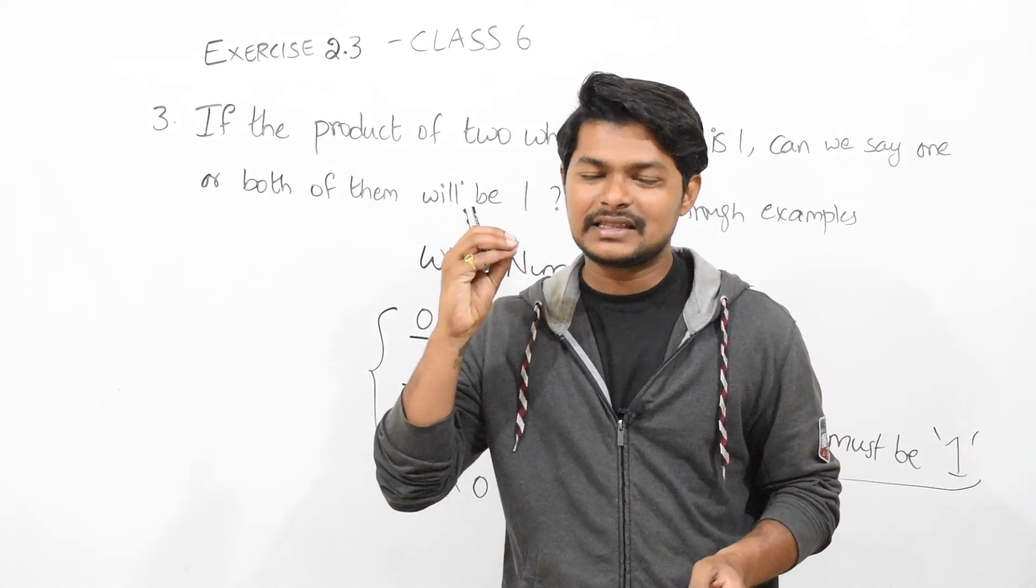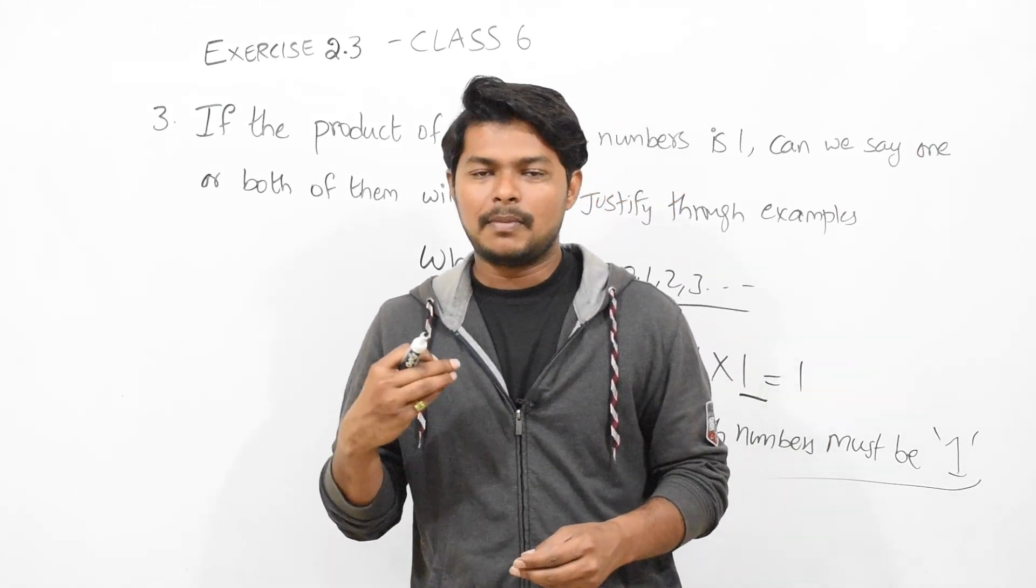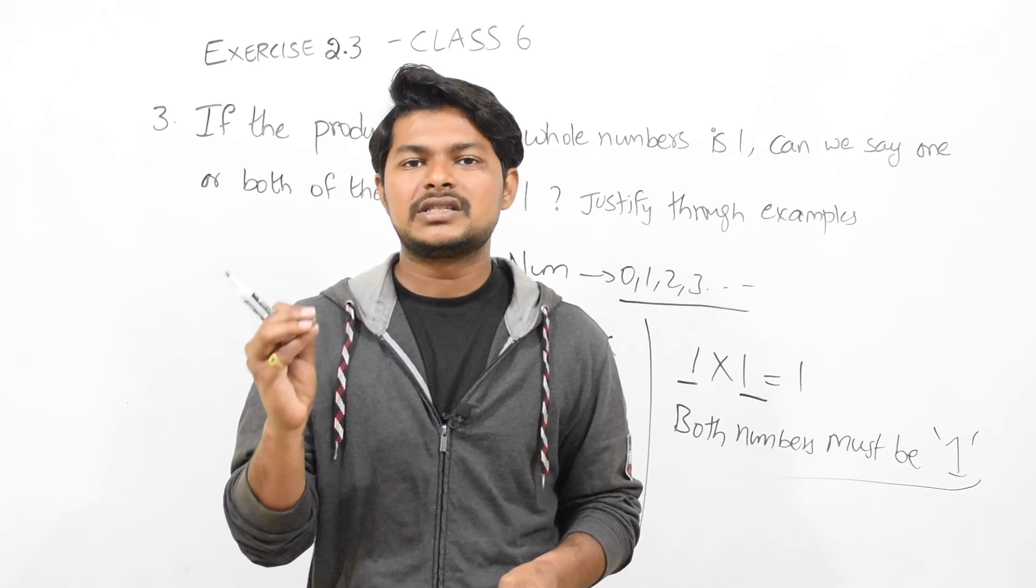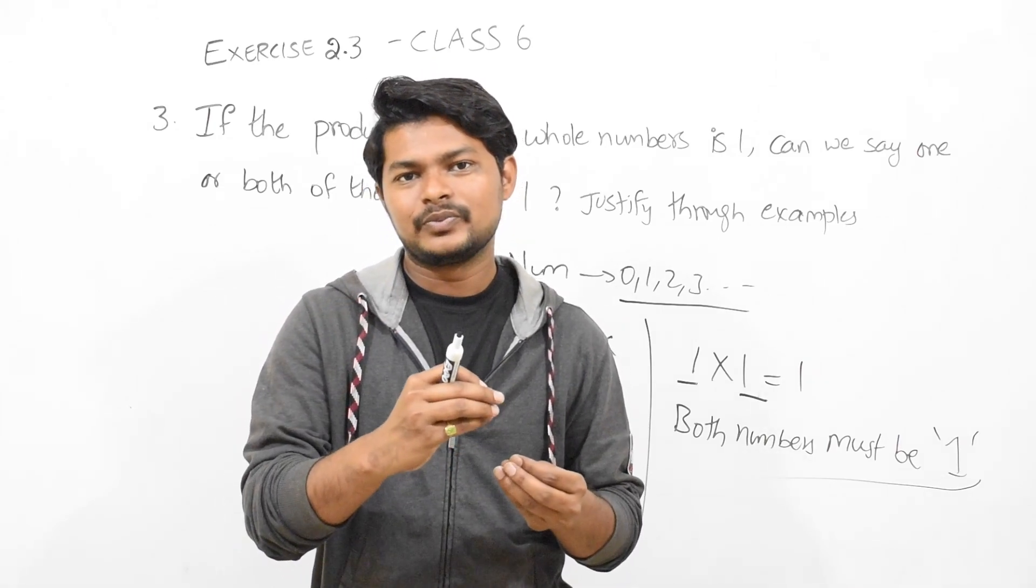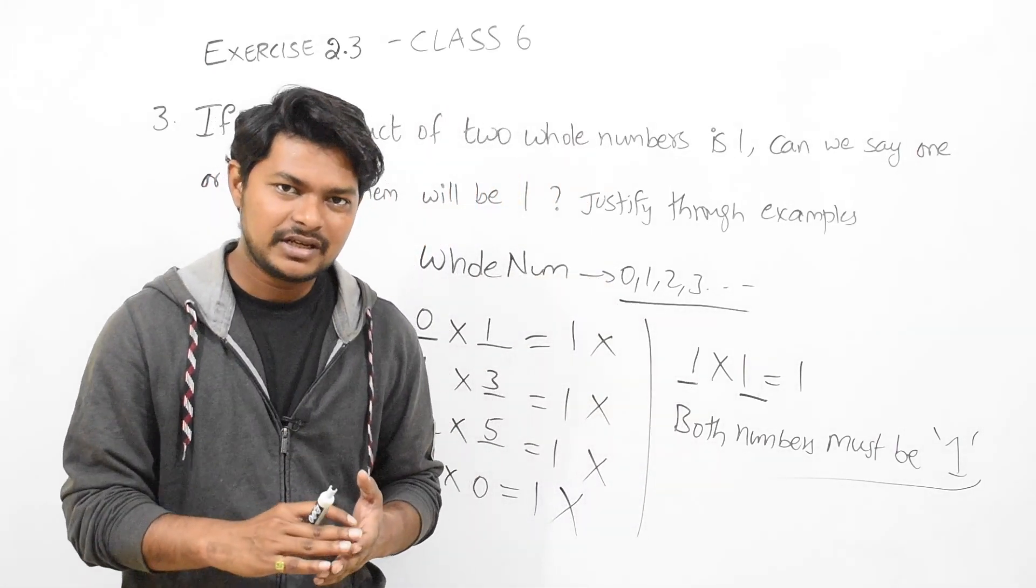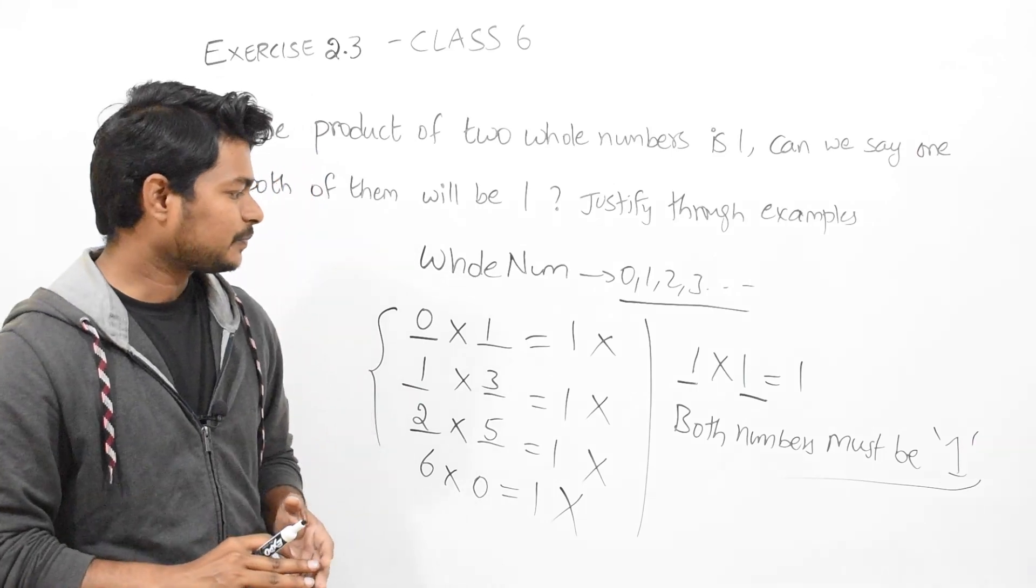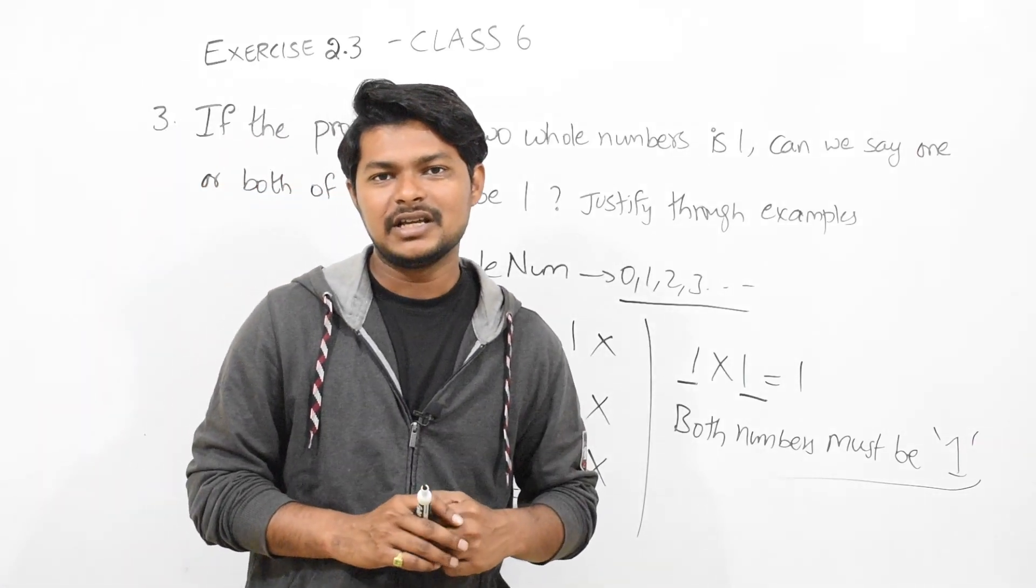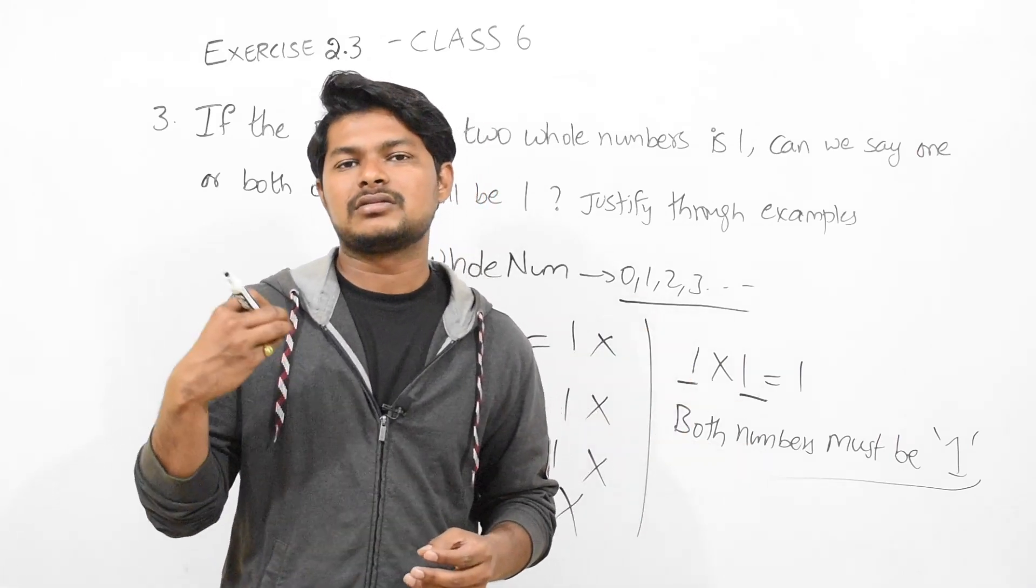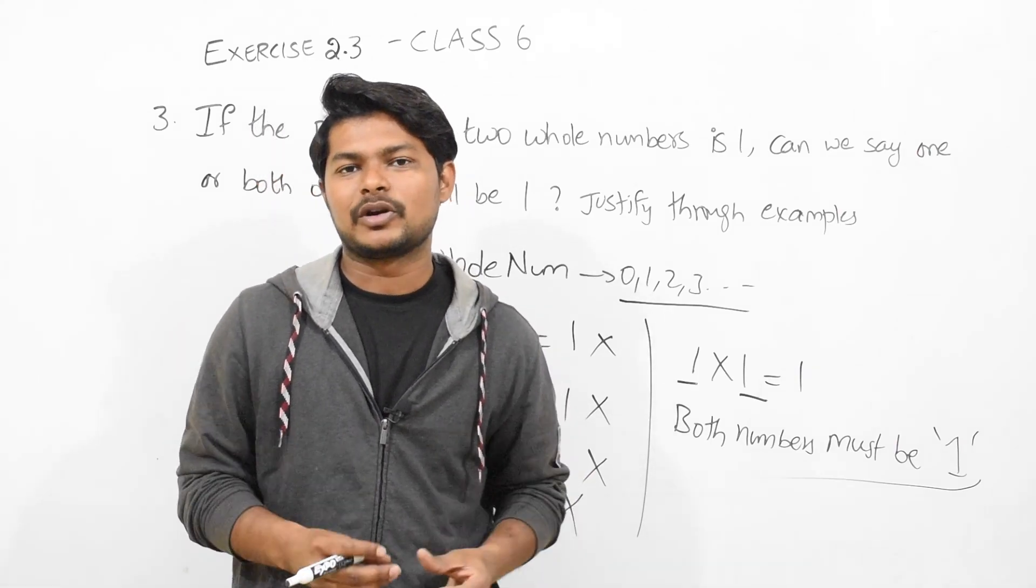Now here if you take 1 into 1, it equals how much? 1. See, if you take 1 as a whole number and multiply by another 1 which is also a whole number, the answer will be 1. In any case, the product will not be equal to 1 since we have seen several cases. If you want, you can still take another one: 6 into 0 is equal to 1, is it true or false? This is wrong because 6 into 0 equals 0.